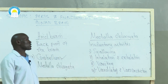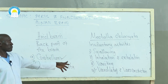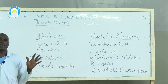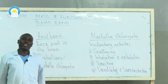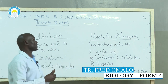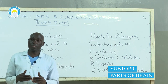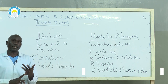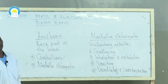So medulla oblongata is responsible for controlling involuntary activities. In short, the brain has three main parts — forebrain, midbrain, and hindbrain — each divided into sections that perform specific functions. In the next lesson we will look at cranial nerves, spinal nerves, and then start on the spinal cord. Thank you for now.